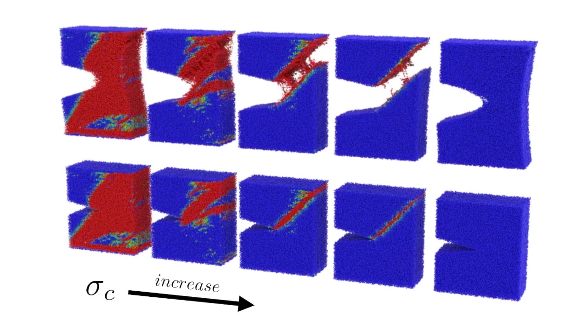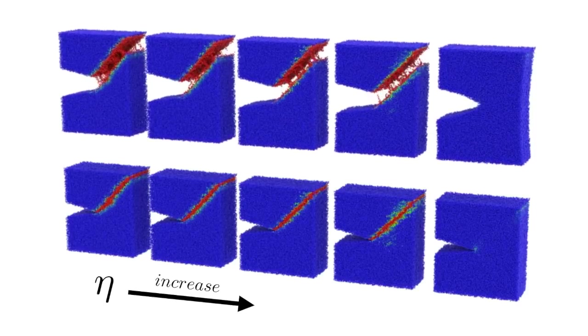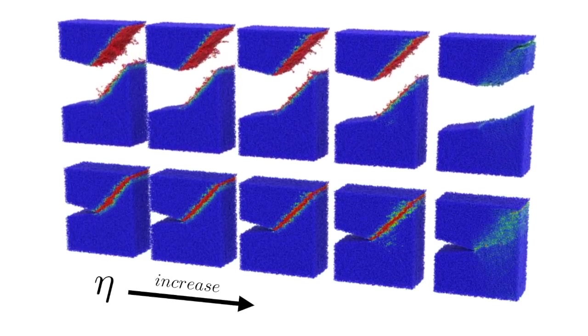Here, we show that the material resistance to damage can be controlled with the critical stress, and that the crack propagation speed can be controlled with the mobility constant, eta.